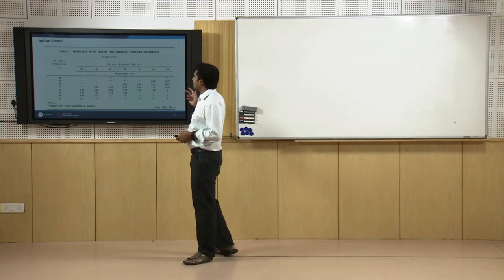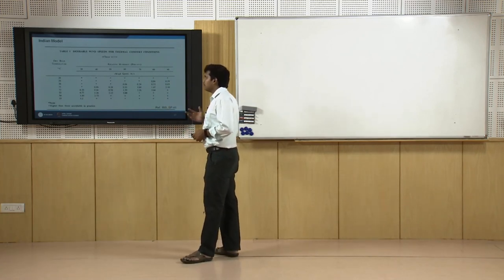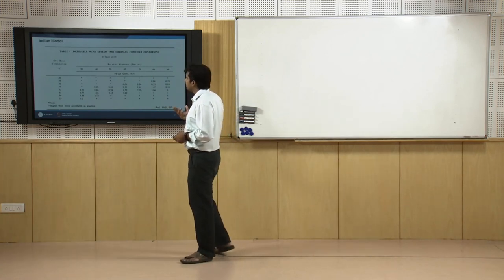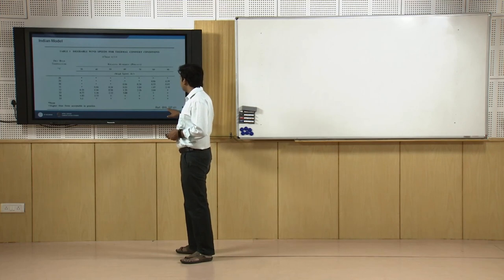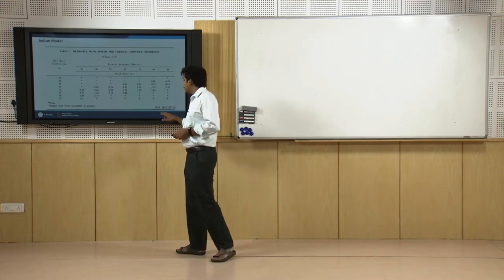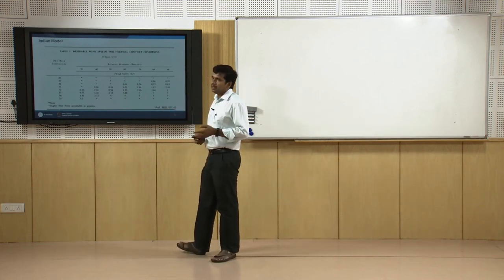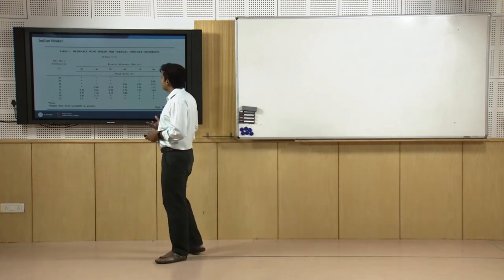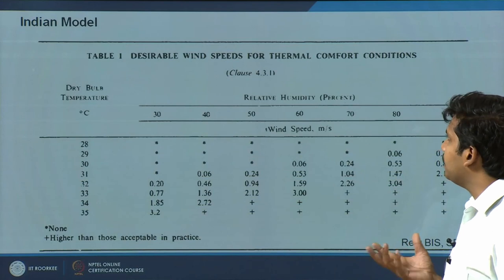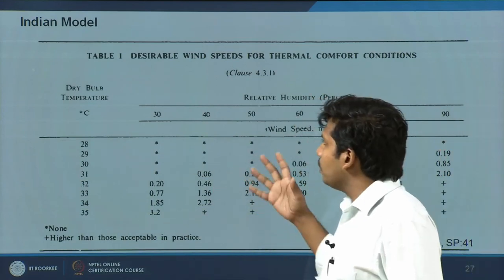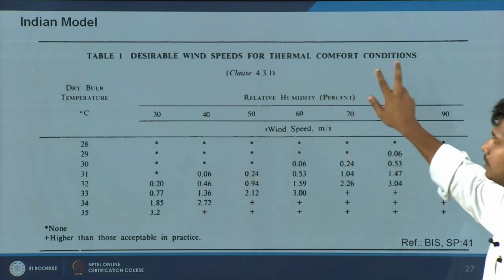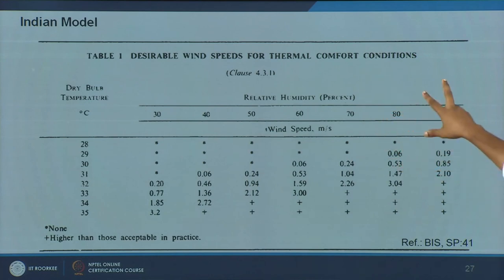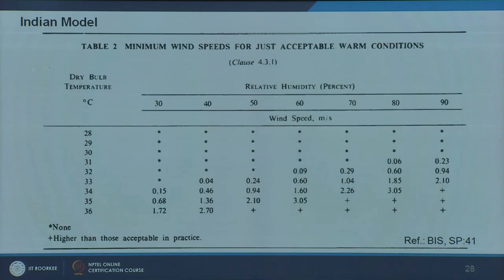Coming to our Indian model — this is Bureau of Indian Standard SP 41, the Handbook of Functional Efficiency in Buildings. It is a very old standard in use. Two tables are presented: one for conditions for thermal comfort, and the next for conditions for acceptably warm conditions.